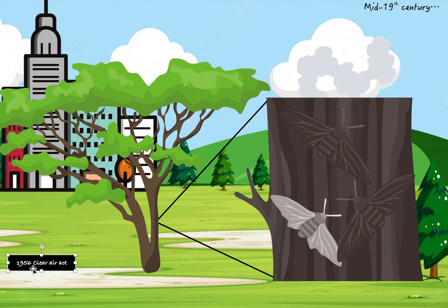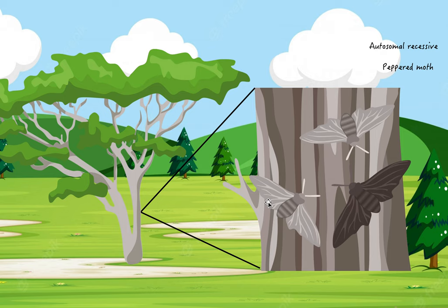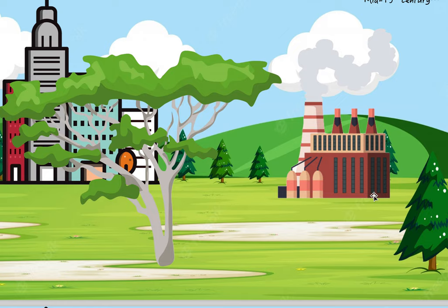Now, after this, Britain started the 1956 Clear Air Act in which basically they stopped building these factories and prevented pollution from being made. And so, the trees started recovering and going back to normal. And so now, they noticed again that these white ones were able to camouflage. And so through evolution, these white ones started multiplying and becoming more again and the black ones became scarce.